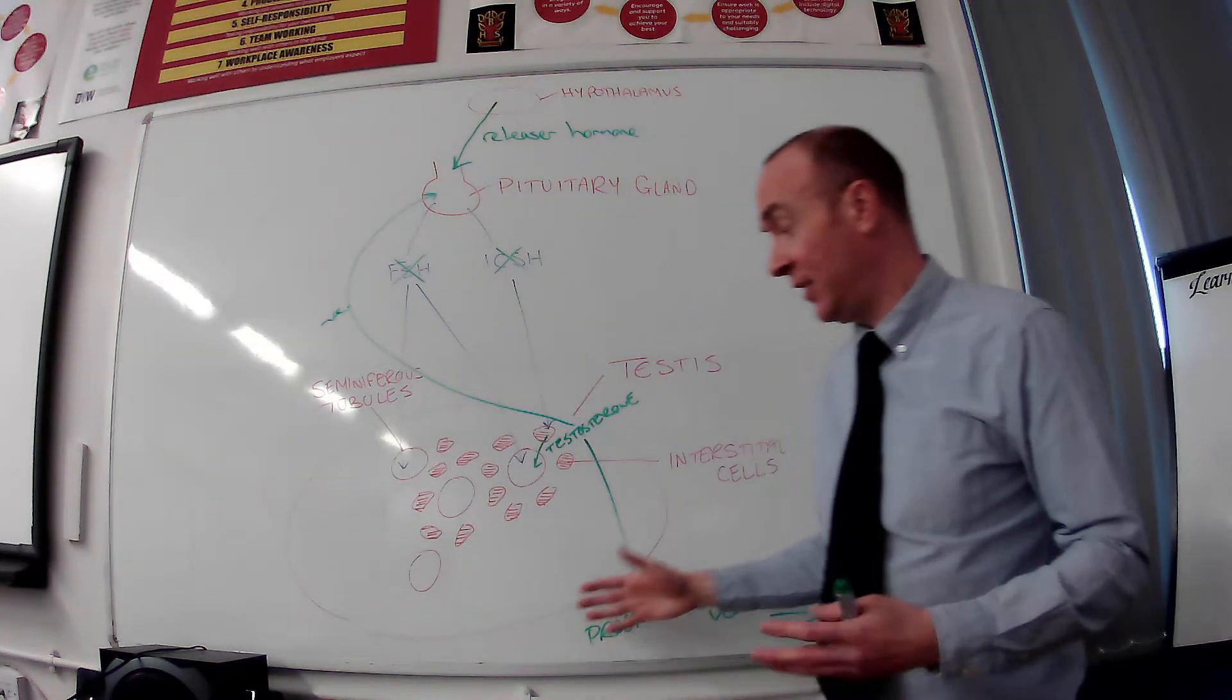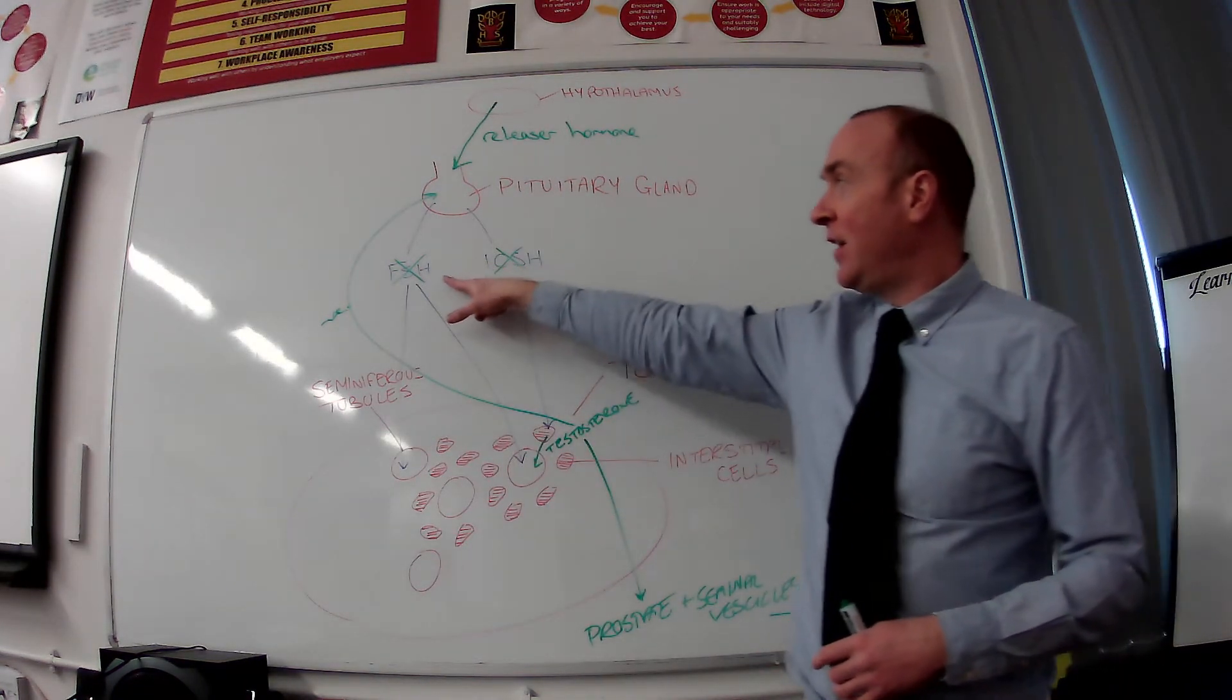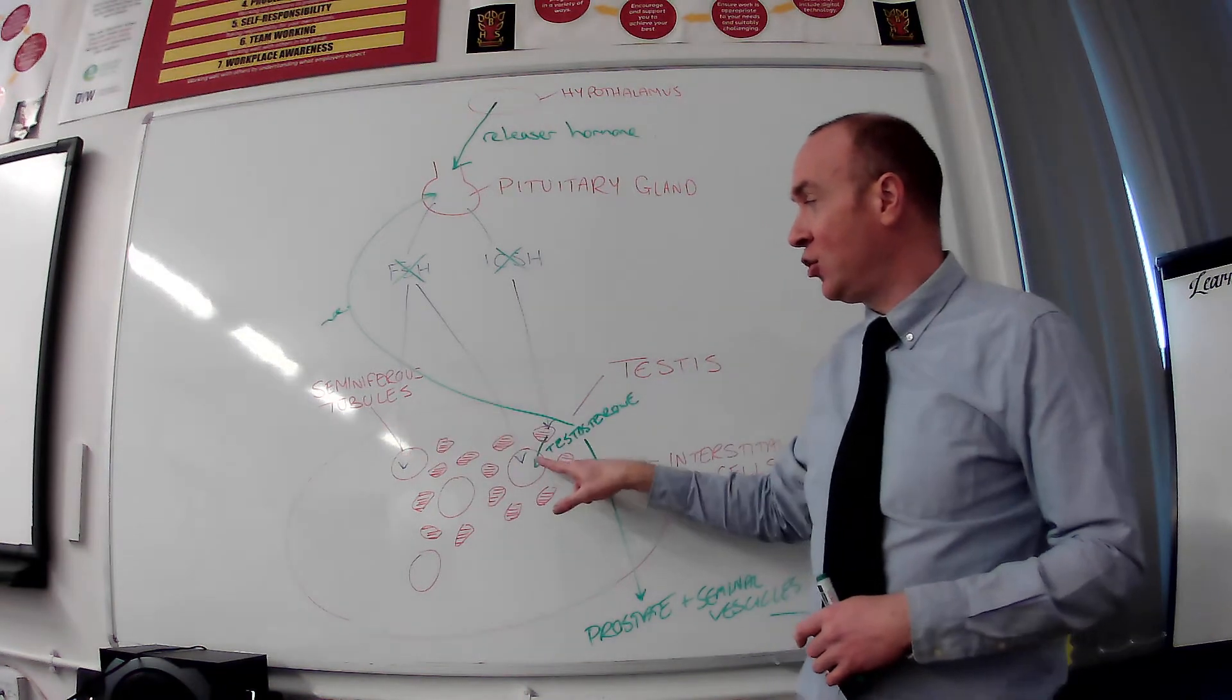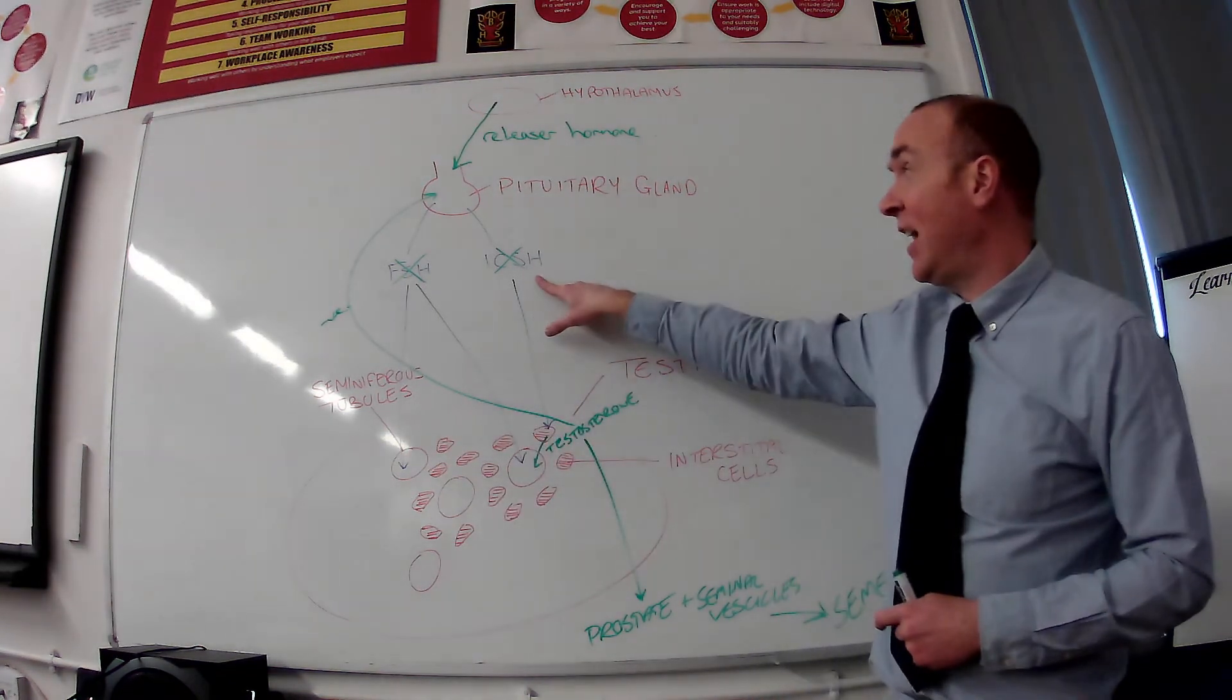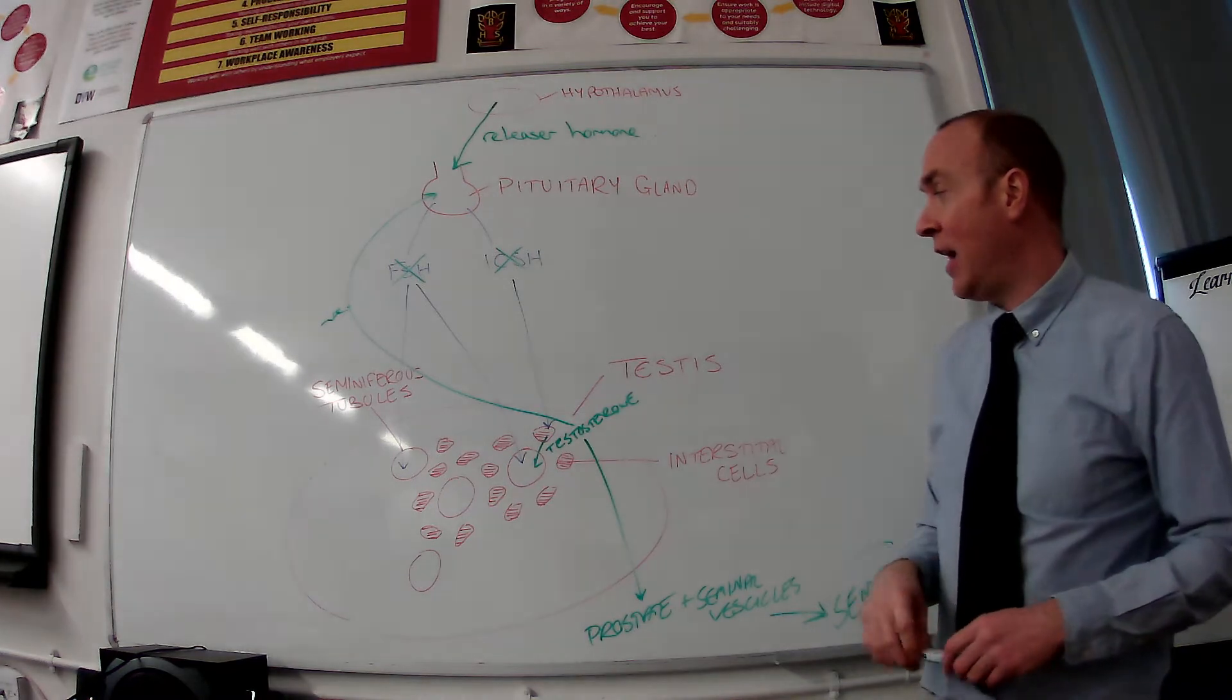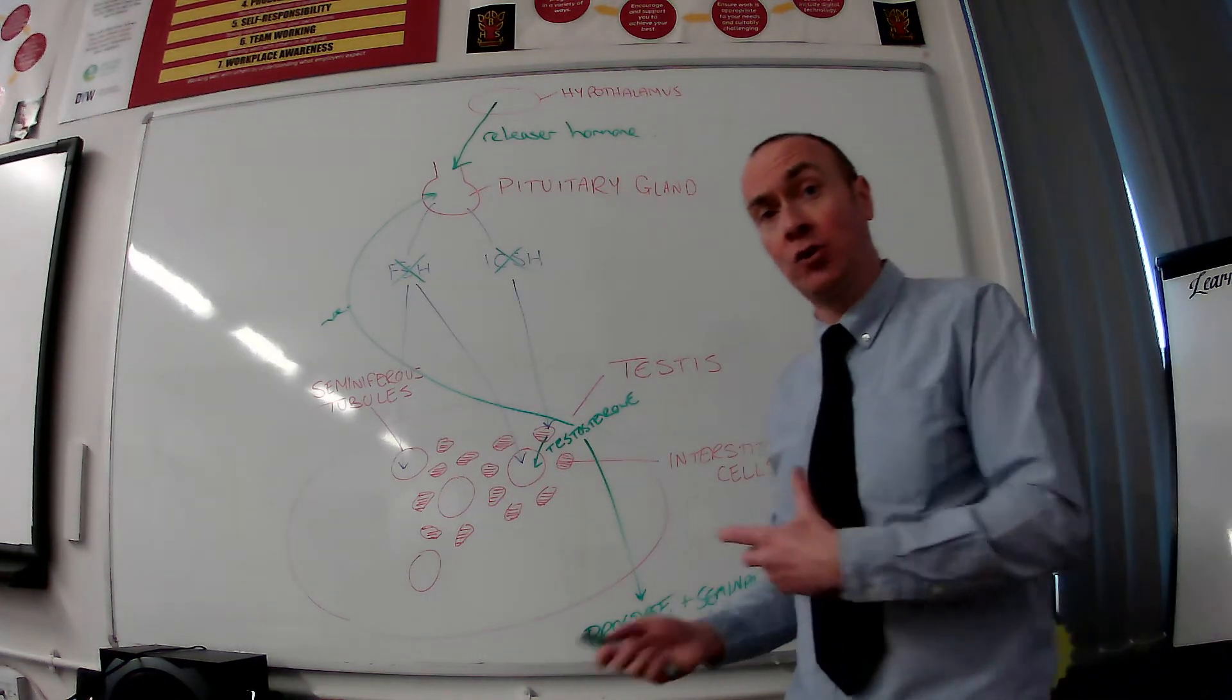They both act on the testis, or the testes. The FSH acts directly on the seminiferous tubules to trigger sperm production. And ICSH acts directly on the interstitial cells to trigger testosterone production.